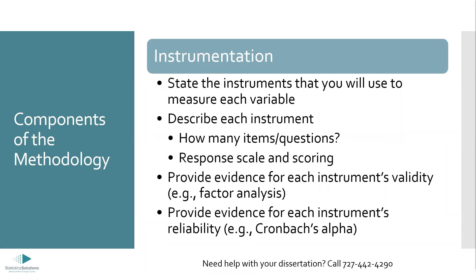After discussing the population and sample, you get into the more procedural aspects of your study, beginning with instrumentation. You want to state all the instruments you're going to use to measure the variables in your study. For every variable listed in your problem, purpose, and research questions, you need an instrument that measures that variable. In social science research, this often means using some kind of survey instrument that measures different constructs of interest.